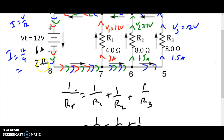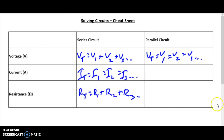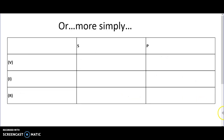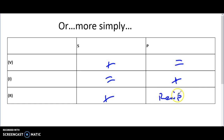Looking at our cheat sheet, remember that in a parallel circuit, current adds up: IT equals I1 plus I2 plus I3. For resistance, it's 1/RT equals 1/R1 plus 1/R2 and so on. As a shorthand: in a series circuit, voltage adds up, current is the same, and resistance adds up. In a parallel circuit, voltage is the same everywhere, current adds up, and resistance uses the reciprocal formula. In the next video, I'll show you what happens when circuits are more complicated.